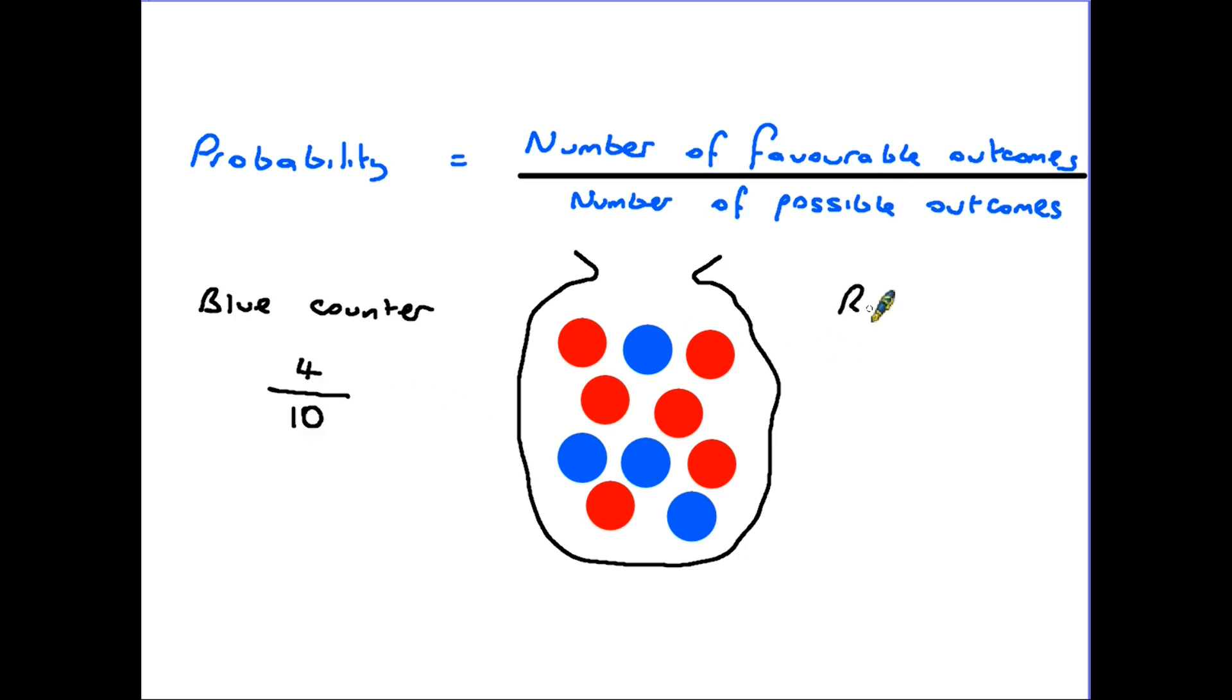On the other hand if we are looking for the probability of drawing out a red counter the same number of counters are in that bag. Ten but this time there are six red counters. So you have six possible chances of bringing out a red counter. Therefore the probability is six out of ten. There are more red counters so therefore it is a higher probability.